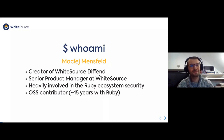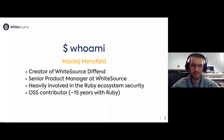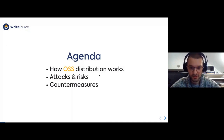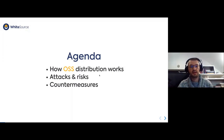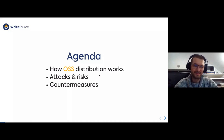I'm heavily involved in the Ruby ecosystem community and ecosystem security, a bit less with NPM, but I'm slowly catching up. I've been an active open source software contributor with more than 15 years of contributions to the Ruby ecosystem. Today, we're going to talk about how open source software distribution works, what are the attacks and risks involved, and how we can countermeasure at least some of them. Let's find out together.